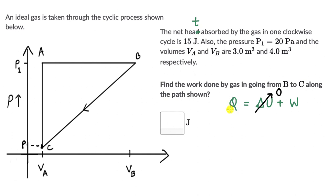So that means that all the heat that was absorbed by the gas, that is equal to the work done. So Q_net, we can write Q_net is really equal to W_net. And this is equal to 15 joules which is given in the question.